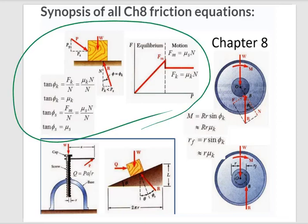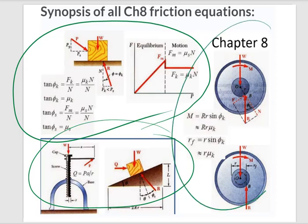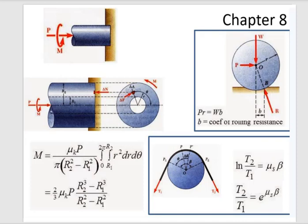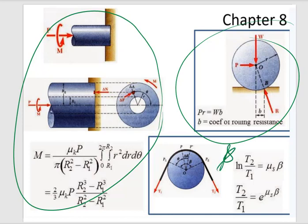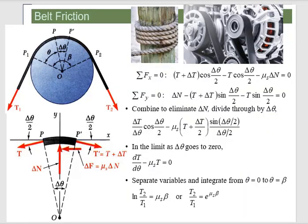The last bit. So we did blocks, threaded fasteners, wheel and axle, thrust bearings, rolling resistance. And the last thing we're going to cover here is belt friction. So everything from the belts on your car to trying to keep your boat from floating away, belt friction.